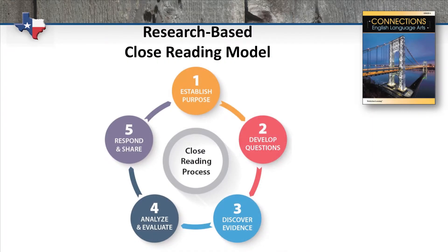Synthesized from a wide array of research, our concrete, skill-focused, close reading model is really what sets Connections apart. It consists of five phases. First, establish purpose: we give the students a skill-focused objective before diving into the text — something to look for and annotate.